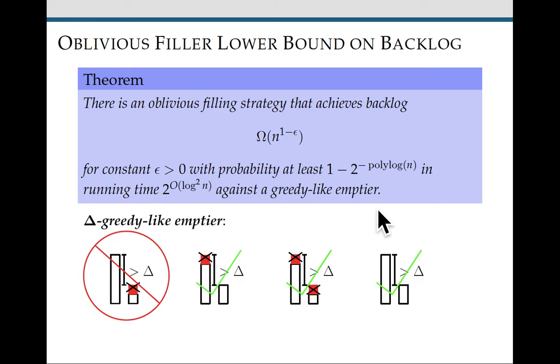First, let me tell you what a greedy like emptier is. And then I'll tell you why it's not so bad that our lower bound only applies to greedy like emptiers in the oblivious case.